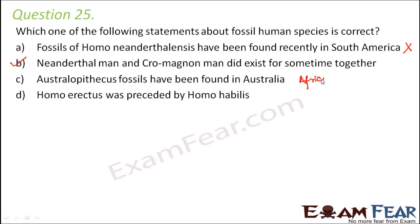Australopithecus fossils found in Australia — incorrect. Australopithecus is known as the African ape-man because fossils were found in Africa, not Australia. Homo erectus was preceded by Homo habilis — this is partially correct, since Homo habilis came first and then Homo erectus. So both options B and D are correct.